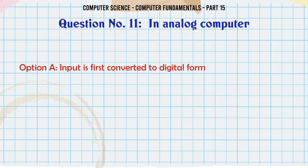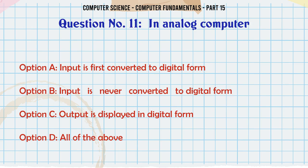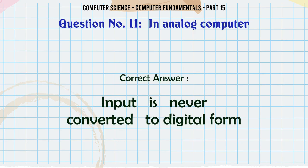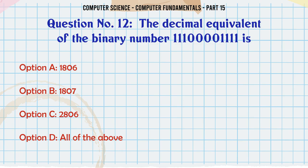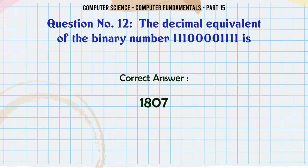In analog computer: A. Input is first converted to digital form B. Input is never converted to digital form C. Output is displayed in digital form D. All of the above. The correct answer is Input is never converted to digital form. The decimal equivalent of the binary number 11100001111 is 1807.